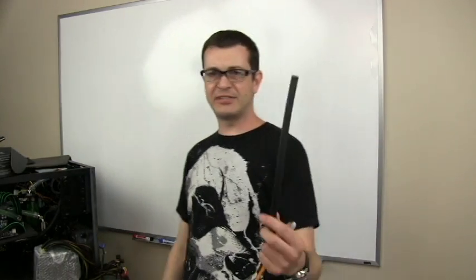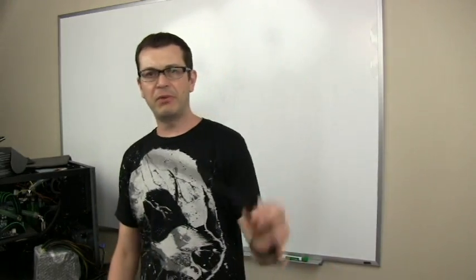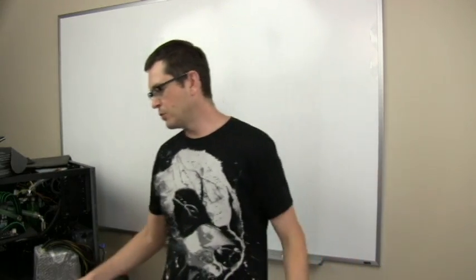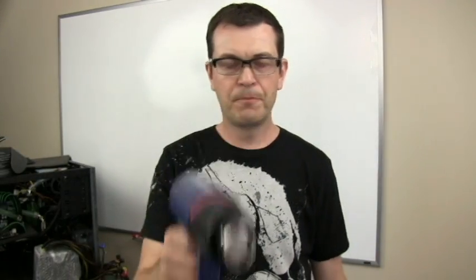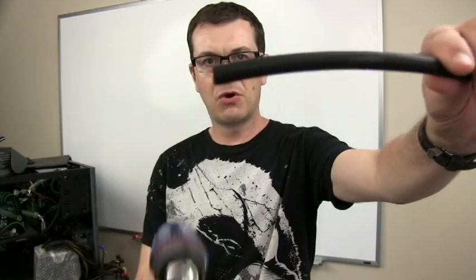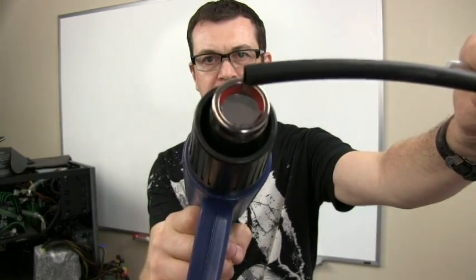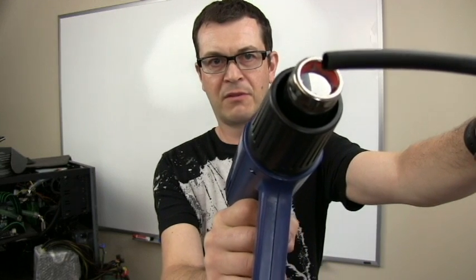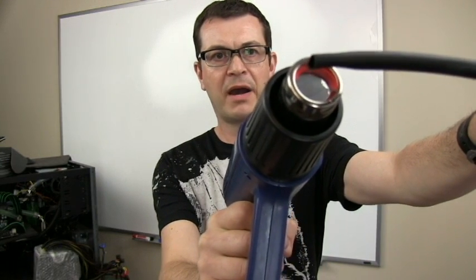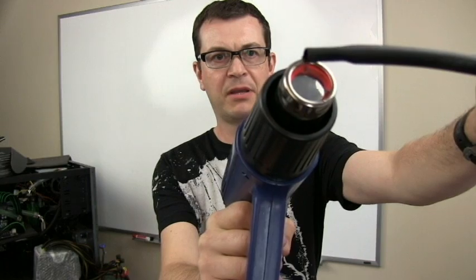So first of all, what the hell is heat shrink? Well, it's sort of a plastic thingy that when applied with heat it reduces its diameter, and I'll show you how it works. So we have a heat gun here, and we have heat shrink. If we start heating heat shrink, I'll try to show you in front of the white board so you can see what's happening.